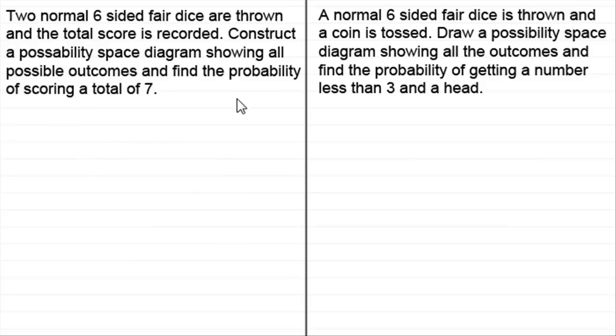Like this example here, we've got two normal six-sided fair dice thrown and the total score is recorded. Construct a possibility space diagram showing all the possible outcomes and find the probability of scoring a total of seven.